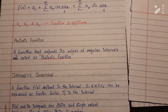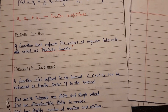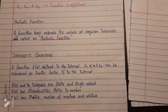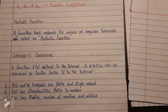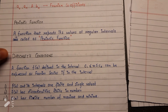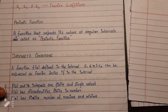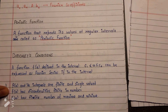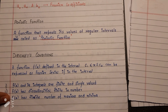Any periodic function which we wish to express in the form of a Fourier series should satisfy certain conditions called Dirichlet's conditions. They are: f(x) and its integrals are finite and single-valued; f(x) has discontinuities that are finite in number; and f(x) has a finite number of maxima and minima.